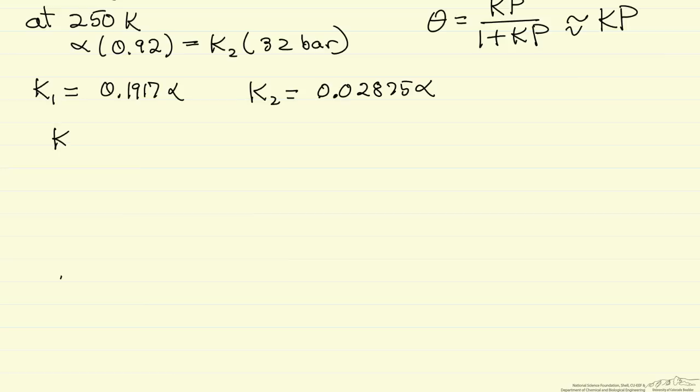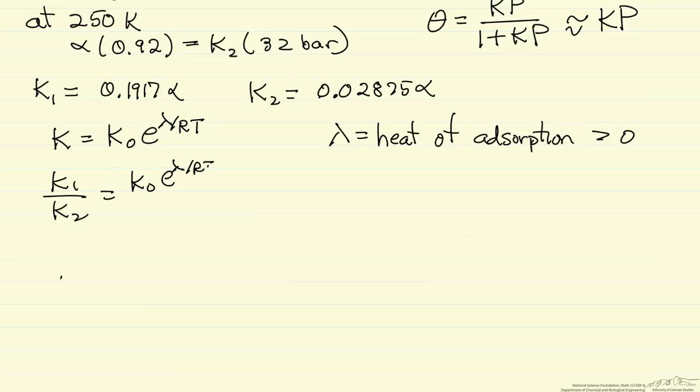Now k is related to the heat of adsorption by a pre-exponential factor e to the lambda over RT, where lambda is the heat of adsorption, absolute value of the enthalpy change, because adsorption is typically exothermic. And so I'm going to write k1 divided by k2 in terms of lambda and the temperatures. k0 doesn't change, lambda doesn't change, gas constant doesn't change, temperature is different. So k0s cancel.